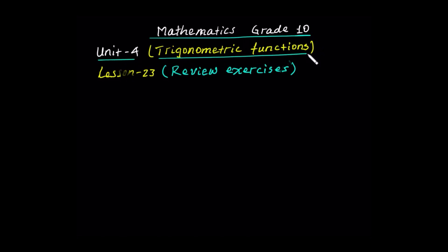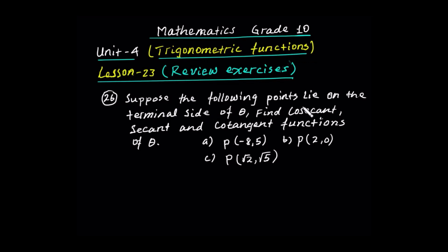This is the last lesson, lesson 23. Lesson 23 is a review exercise. Suppose the following points lie on the terminal side of theta. Find cosecant, secant, and cotangent functions of theta. A: if the terminal side passes through the point P with coordinate negative 8, 5. B: if the terminal side of angle theta passes through point (2, 0). C: if the terminal side passes through the point P with coordinates root 2 and root 5.